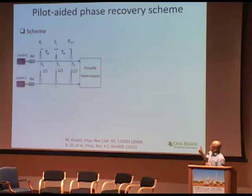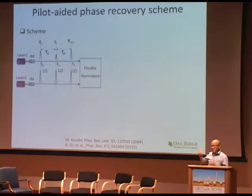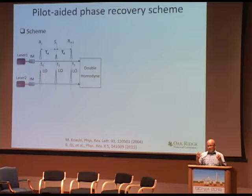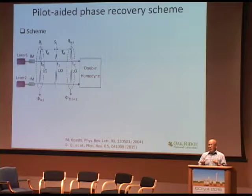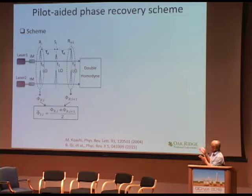For simplicity, we use an intensity modulator to modulate the output of laser one — Alice's CW laser — to generate both the reference pulse and the signal pulse, alternately with the same time delay. At Bob's side, he uses a double homodyne detection scheme and can determine the phase of each pulse using his own local oscillator. The measurement on the reference pulse provides the phase difference between the two lasers at the times when the reference pulses are generated. We then average two phase difference measurements as an estimation of the phase at the time when the signal is measured.